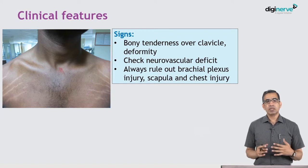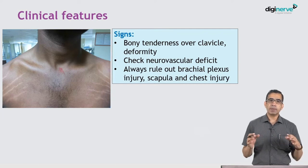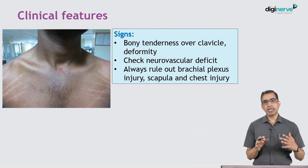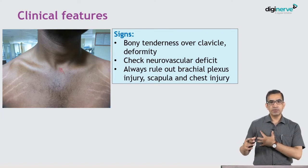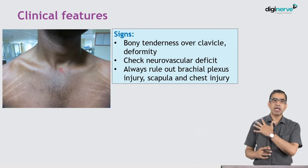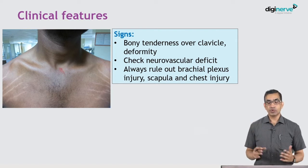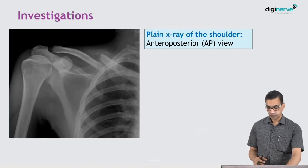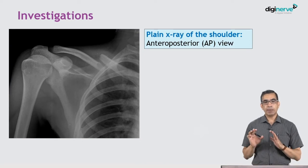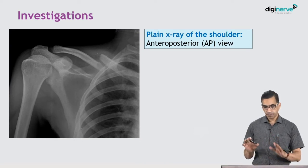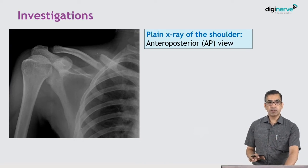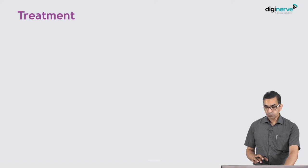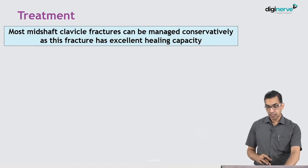Many times these patients are part of polytrauma, so there may be injury to the ribs, chest, and the scapula that has to be ruled out. To confirm your diagnosis, take a plain X-ray, which will confirm most fractures of the clavicle.